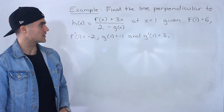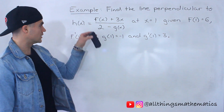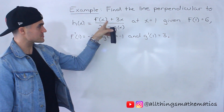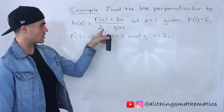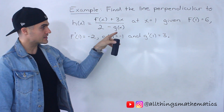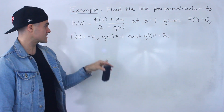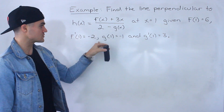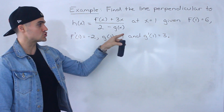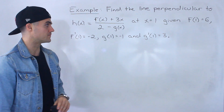Moving on to the next question, we've got to find the line perpendicular to the function h of x, which is f of x plus 3x all over 2 minus g of x, at an x value of 1, given that f of 1 equals 6, f prime of 1 equals negative 2, g of 1 equals negative 1, and g prime of 1 is equal to 3.